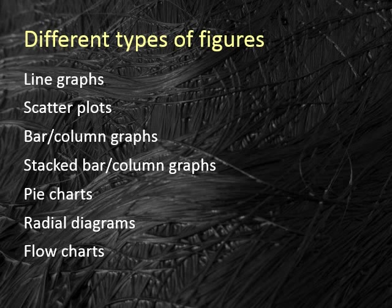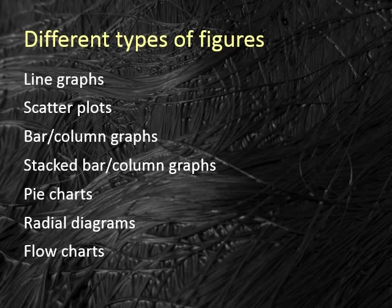There are lots of different figure types that can be used to present data, including line graphs, scatter plots, bar or column graphs, stacked bar or column graphs, pie charts, radial diagrams, and flow charts. Not all of these options work well for all types of data—in some cases they may be outright inappropriate. Over the next few slides, we'll discuss each figure type and provide examples of what works and what doesn't.